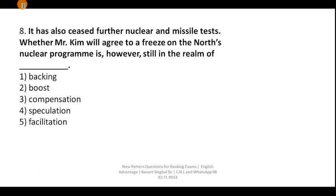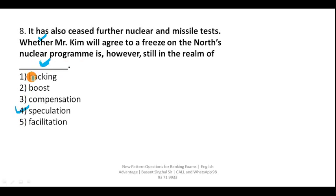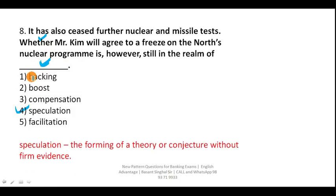Question eight: 'Whether Mr. Kim will agree to a freeze on the North's nuclear program is ___.' Here we are doubtful — using the word 'whether' shows we are speculating. You need a word referring to doubtfulness or speculation. So your correct answer is option four — speculation. Speculation means forming of a theory or conjecture without firm evidence.